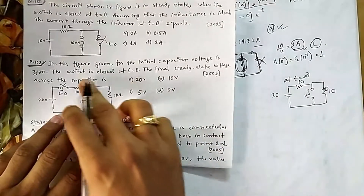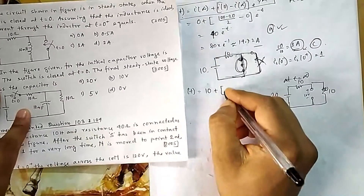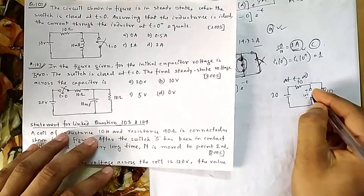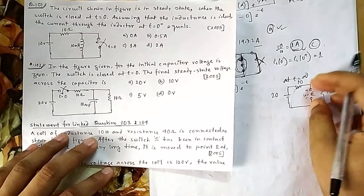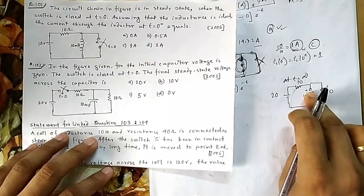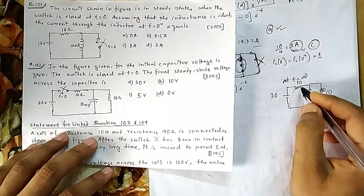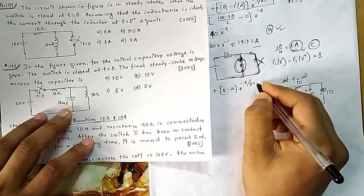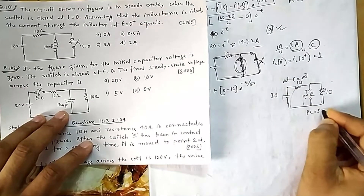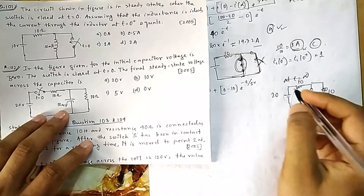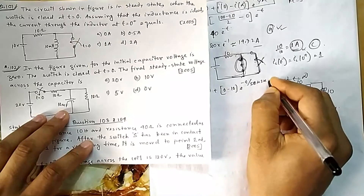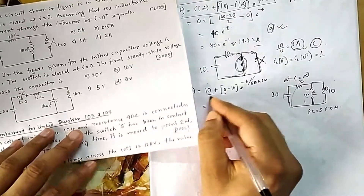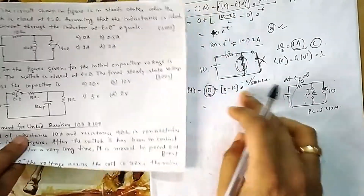The initial voltage was 0, so v_C(t) = 0 + (0 − 10)e^(−t/RC) = −10 e^(−t/RC). To find RC, open the capacitor and look at the resistance seen from its terminals: the two 10Ω resistors are in parallel, giving 5Ω. So RC = 5 × 10 μF = 50 microseconds. The final steady-state voltage across the capacitor is 10 volts.